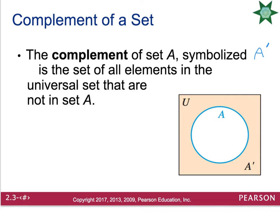Another notation that will be used often is the complement. The complement is going to use the set letter — in this case, capital A — with a little apostrophe on it. Often, people will read that as A-prime. When they ask you for the complement, they're asking for all the items that are in the universal set but not in set A. Typically, it's going to be on the outside of the circle.